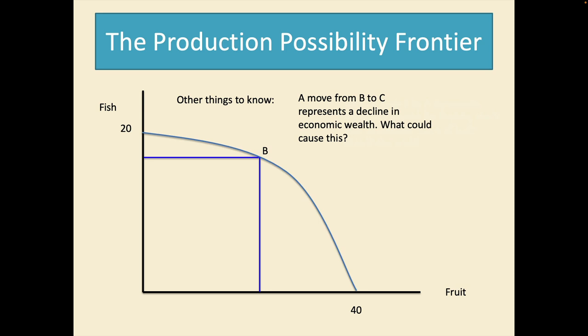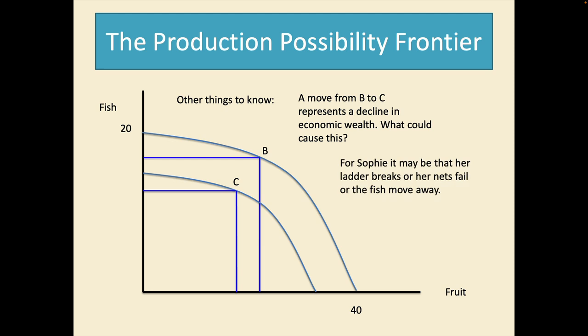What about a move from B to C? Well this is going to represent a decline in economic wealth. The production possibility frontier shifted to the left and we can ask the question what could cause this? Well for Sophie it may be that her ladder breaks or her nets fail or the fish just move away. For an economy it may be a war or a natural disaster or government policies that reduce wealth inadvertently or otherwise.